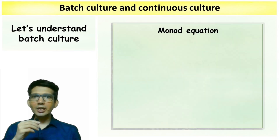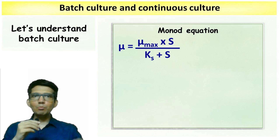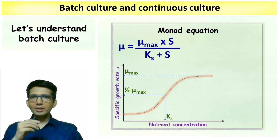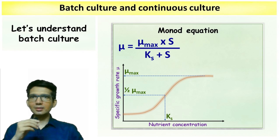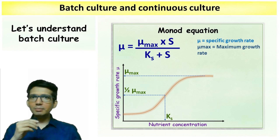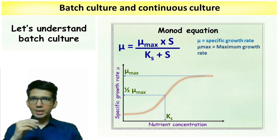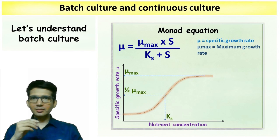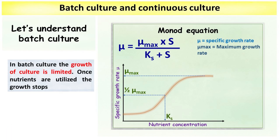The mathematical equation used to estimate growth during batch culture is known as the Monod equation. This equation states: mu is equal to mu max multiplied by S divided by (Ks plus S). Here, mu is the specific growth rate, mu max is the maximum growth rate, and Ks is the concentration of nutrient at which the growth rate becomes half of mu max.